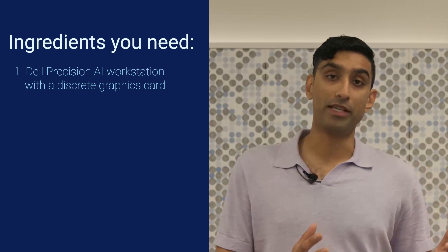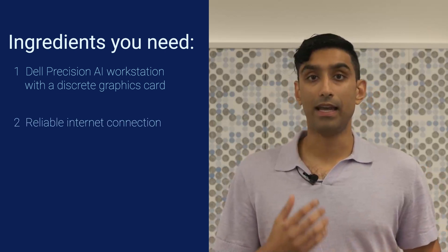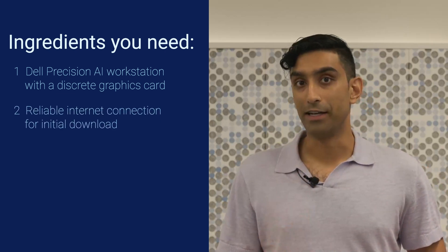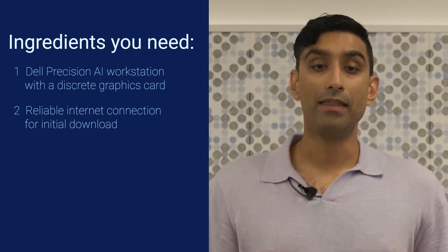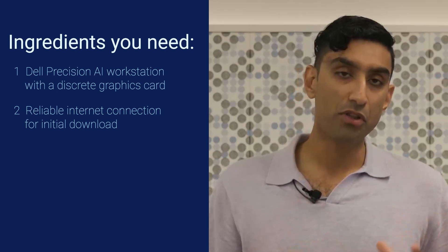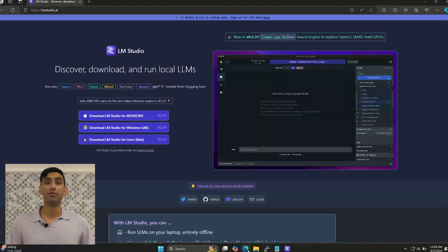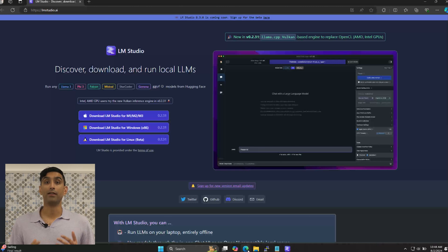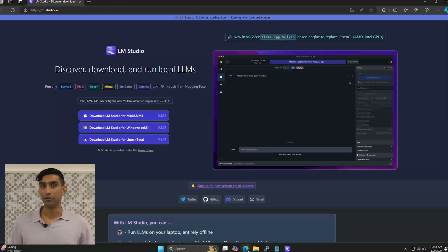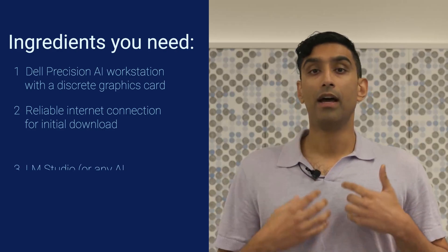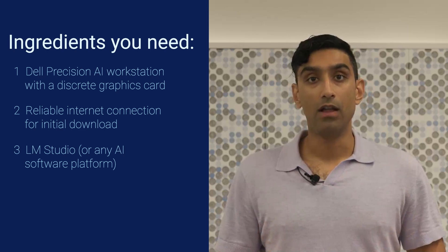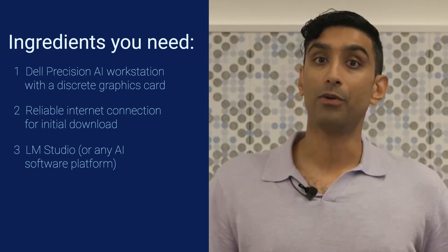Continuing with the ingredients, in addition to your PC itself, you're also going to need a strong, reliable Wi-Fi connection to start with. Then we're going to go to lmstudio.ai. LM Studio is an application that allows you to run AI on your PC. There are a number of other applications that allow you to do stuff like this as well — one example is Ollama, another example is GPT4All. Pick your poison. Today, we're going to start with LM Studio.